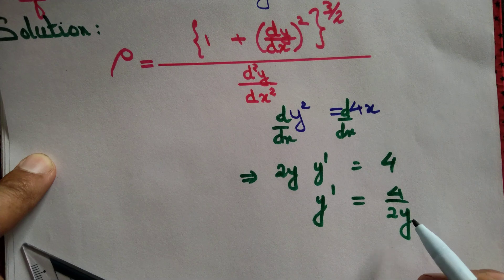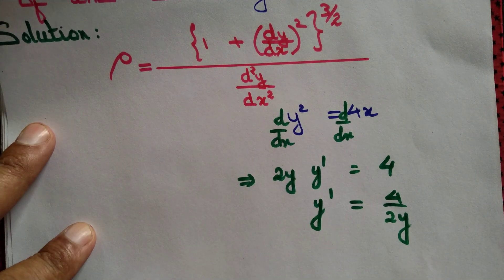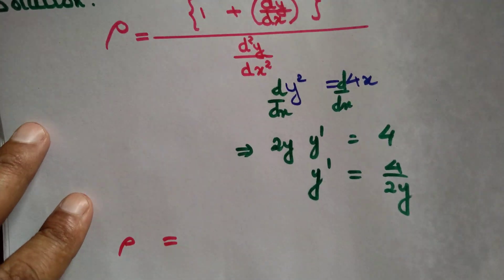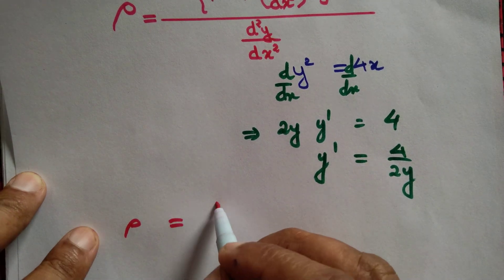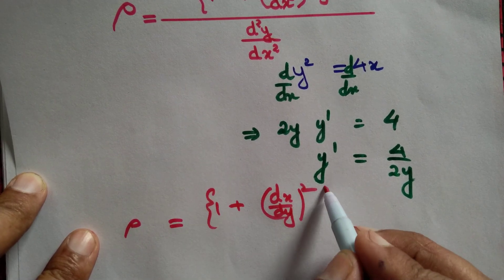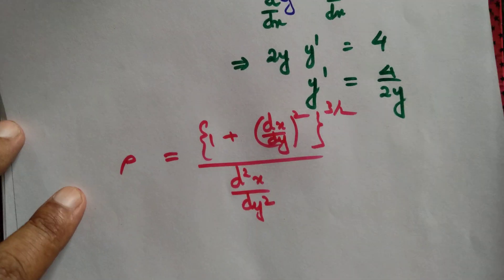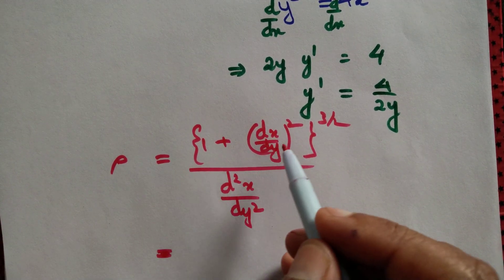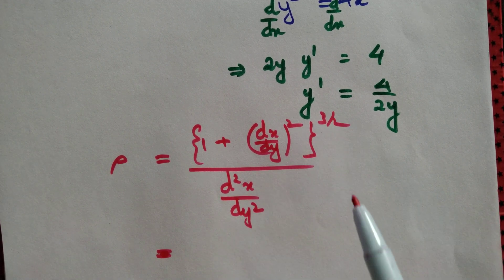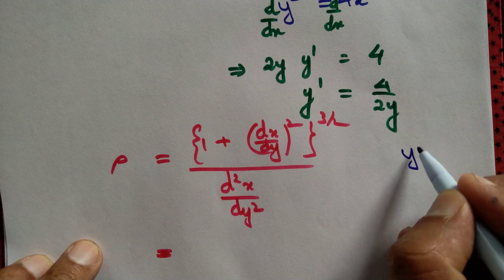Since y' is undefined at the origin, we use a slightly different formula: ρ = (1 + (dx/dy)²)^(3/2) / (d²x/dy²). We apply this formula to the curve y² = 4x.